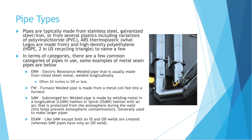What are different pipe types? In terms of materials, pipes are typically made from stainless steel, galvanized steel or iron, or from several plastics, including variations of polyvinyl chloride, which is PVC — those are typically the white pipes you see. ABS thermoplastic, which is the same material that Legos are made from, and high-density polyethylene, HDPE. If you live in the United States, that's the number 2 in the recycling triangle.